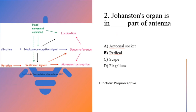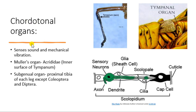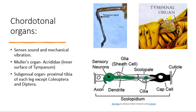When talking about Johnson's organ, we must also understand other chordotonal organs, which sense sound and mechanical vibrations. Johnson's organ is one of the chordotonal organs. Muller's organ in short-horned grasshoppers (Acrididae) — the inner surface of the tympanum is the chordotonal organ sensing sound and mechanical vibrations. In short-horned grasshoppers the tympanum is present in the abdomen, and in long-horned grasshoppers it is present in the fore tibia. The subgenual organ is another chordotonal organ present in the proximal tibia of each leg in all insects.